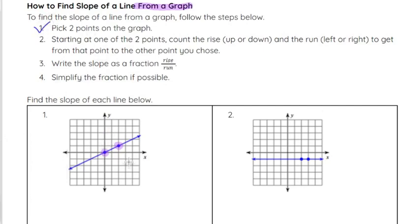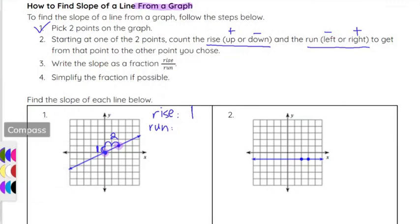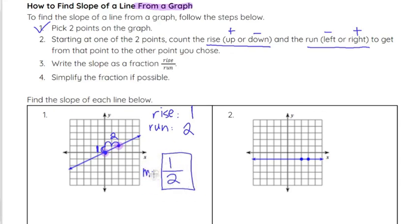Pick two points — we have that done. Step two: starting at one of the two points, it doesn't matter which one, you're going to count the rise, which is your up or your down, and the run, which is your left or your right. If I pick this point, our rise — we are going up to get to that other point — we climb up one. That is our rise, positive one because we are going up. Our run is how many we go right, which is two, and because it's right, it is positive. So up is positive and right is positive; down would be negative and left would be negative. Our rise over our run is one over two, so one half is our slope.